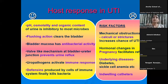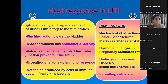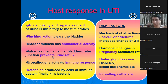When a urinary tract infection sets in, what are the defense mechanisms in the body? The most important thing is the pH, osmolality, and organic content of urine. The more you drink water, the better the flushing action, which can flush out microbes. The mucosa has a certain amount of antibacterial activity, and there are enzymes like defensins and lysozymes which are secreted. There is also the valvular mechanism which prevents reflux from the bladder to the ureter.